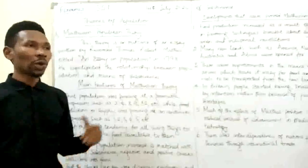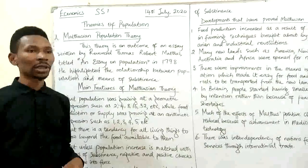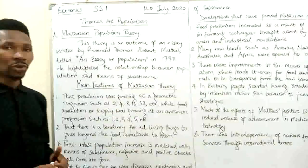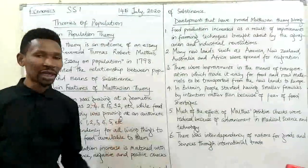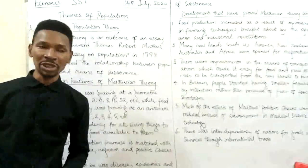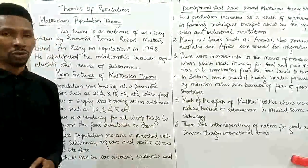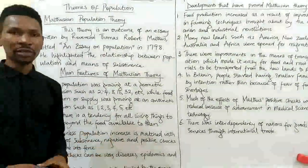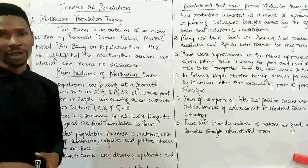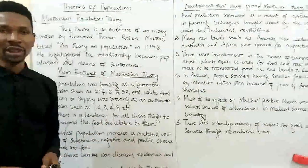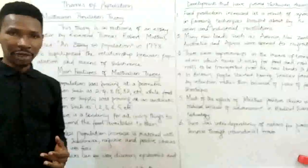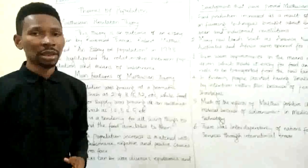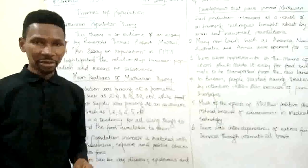We also went ahead to talk about factors that determine population growth — determinants of population size or growth. The factors we identified were broadly categorized into three, which are birth rate, death rate, and migration.